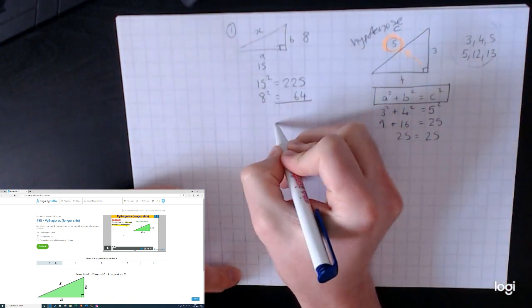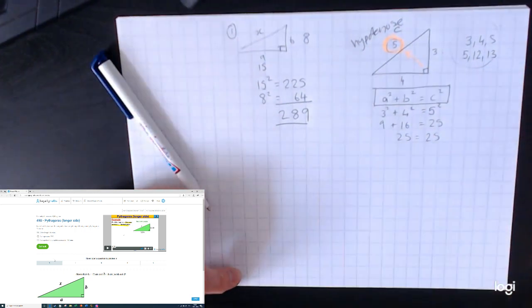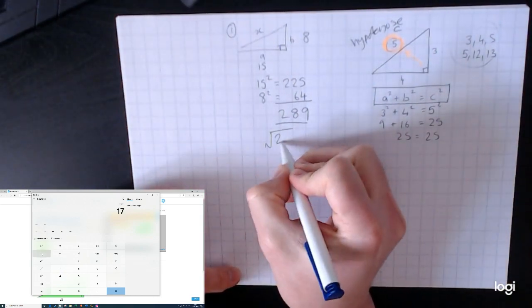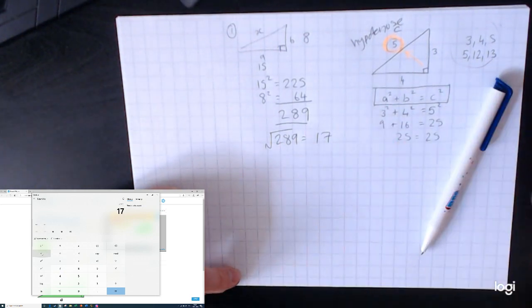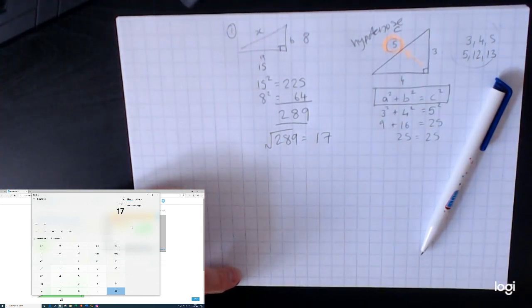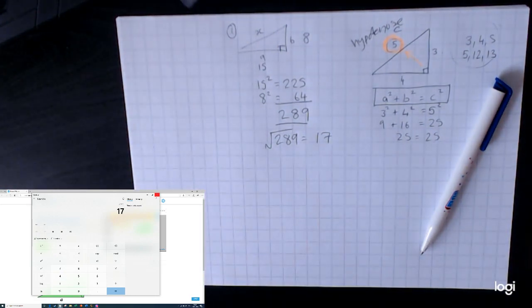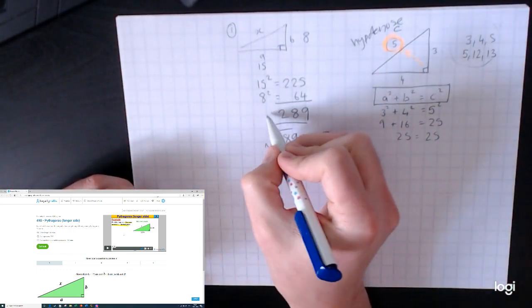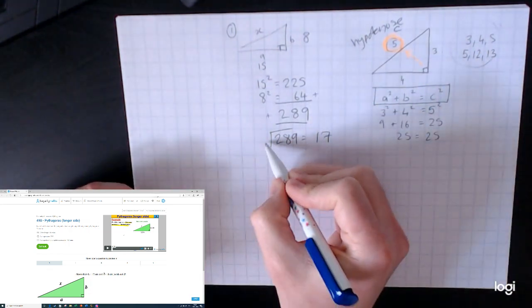First things first, square it. 15 squared is 225, 8 squared is 64. Because we're trying to find the long side, it falls perfectly within this formula, so we're going to add these together now and that's going to equal 289. If you're not going to do those in your head, absolutely use the calculator on your screen. 289, and then find my square root button.